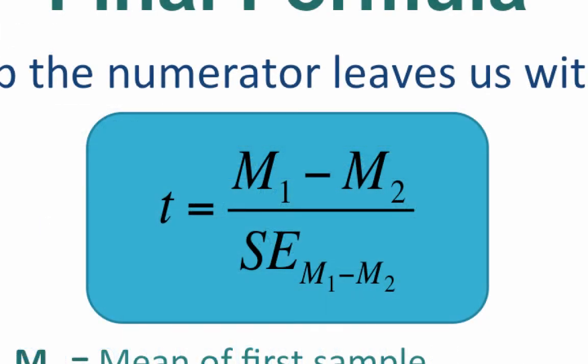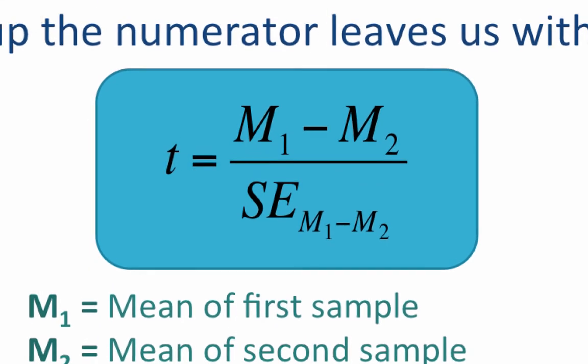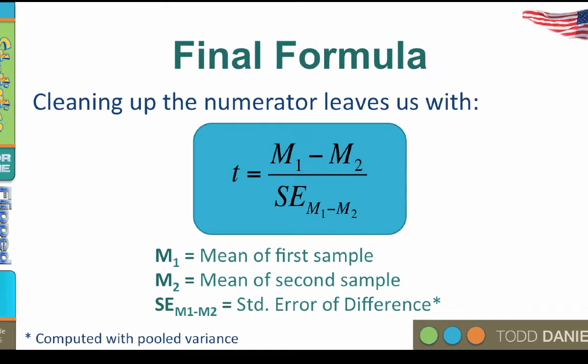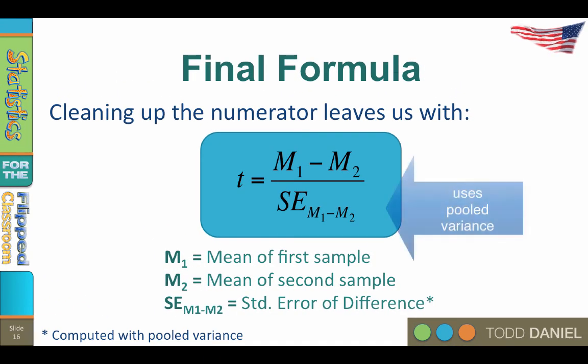The final formula for the independent samples t-test, therefore, will be this. M1 equals the mean of the first sample. M2 equals the mean of the second sample. And that error term is the standard error of the difference, which is computed with pooled variance. And that will require a little more explaining before we use it.